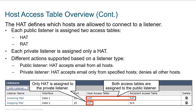The host access table looks like this. You've got your listeners named incoming mail and outgoing mail. On data one we're handling incoming email, data two outgoing email. The default port we're listening on is 25 — remember you could change that for host access tables. This is the name of our HAT; it's just called HAT but you could name it something better. And if we've got different host access tables, we could modify them.